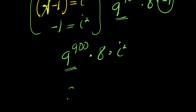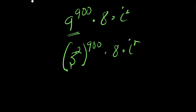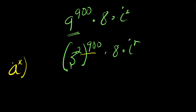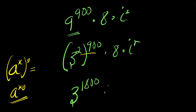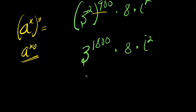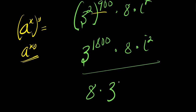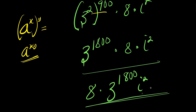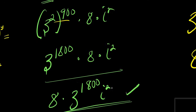And since 9 is 3^2, raised to the power of 900, times 8 times i^2, we can multiply this out to get 3^1800 times 8 times i^2. Rearranging, we can write this as 8 times 3^1800 times i^2. This is also a correct way to express the answer.